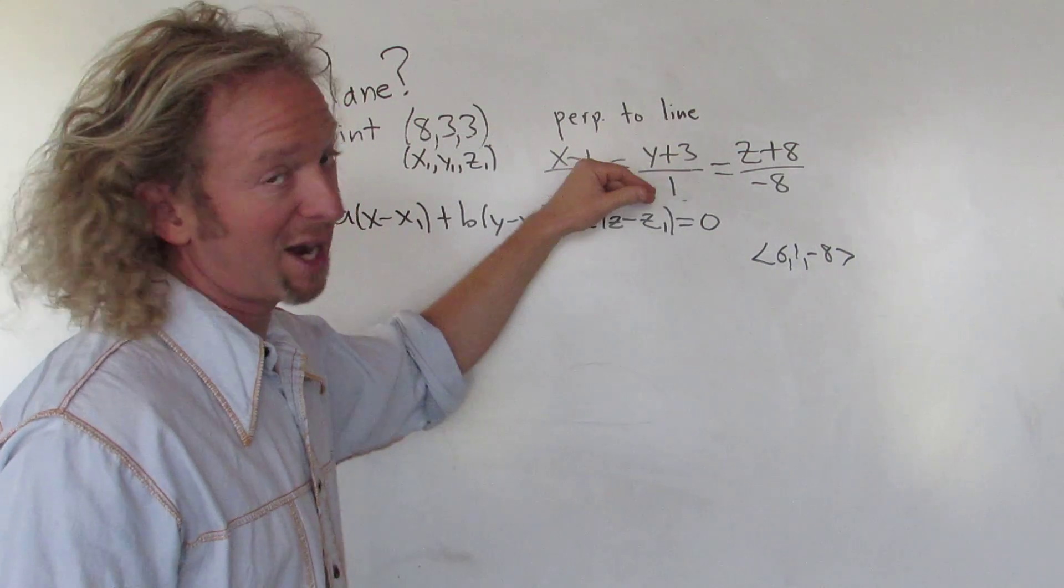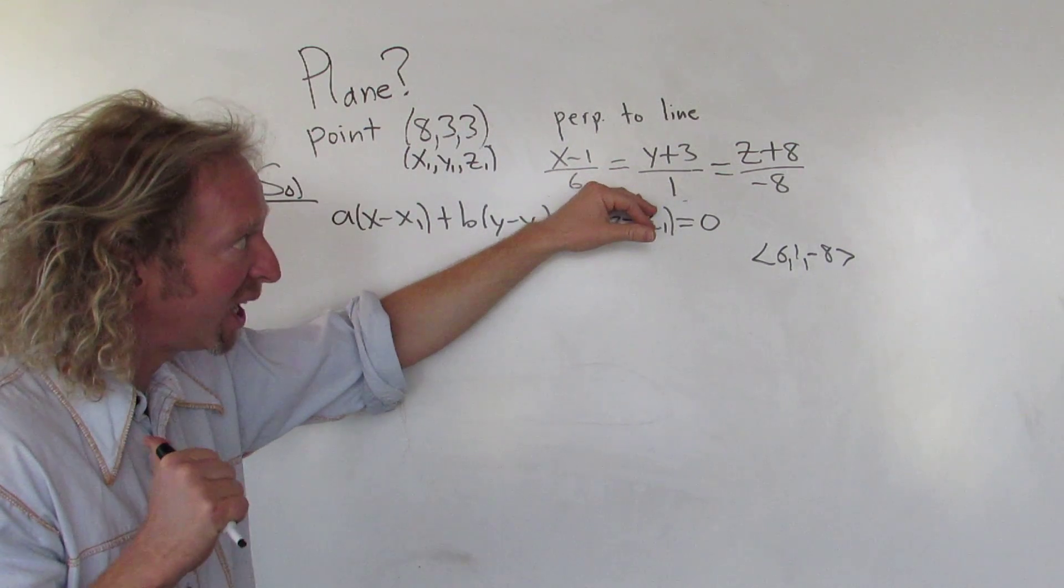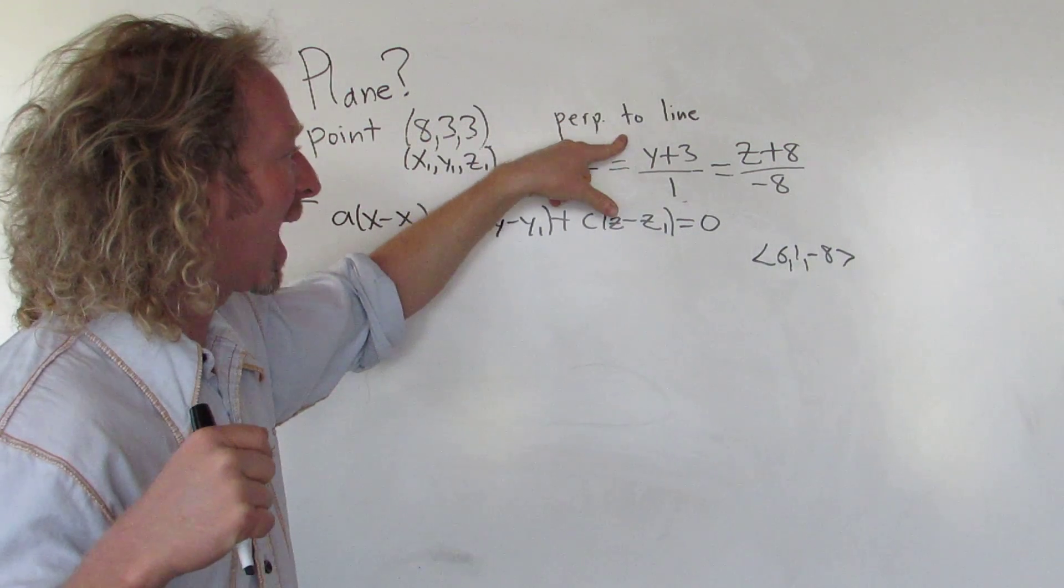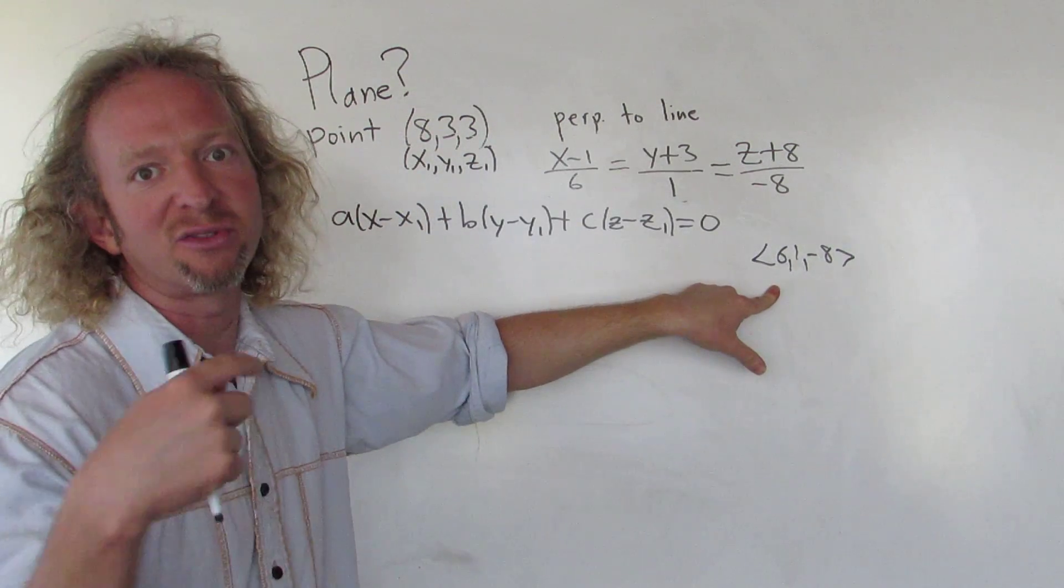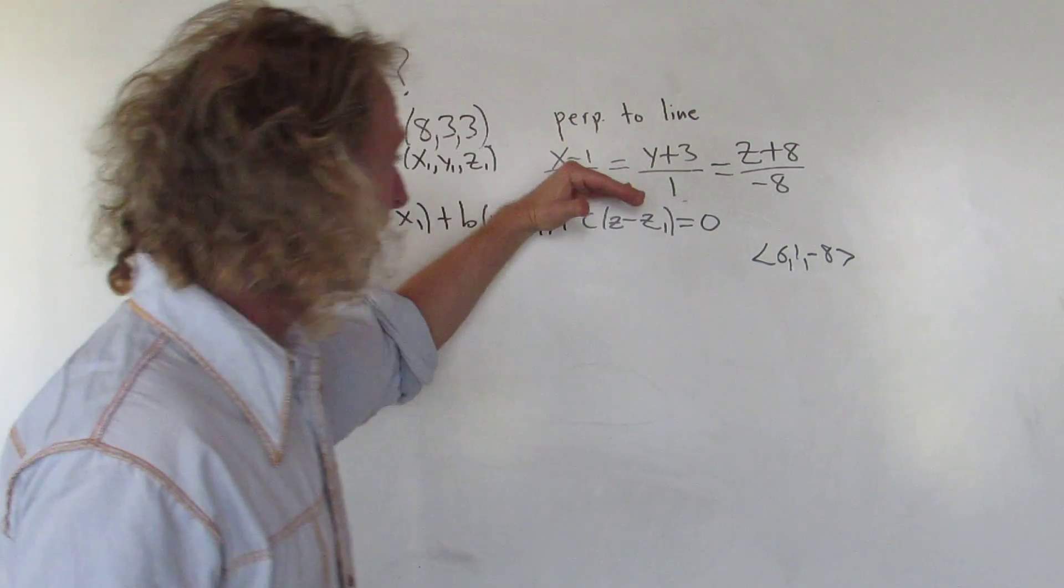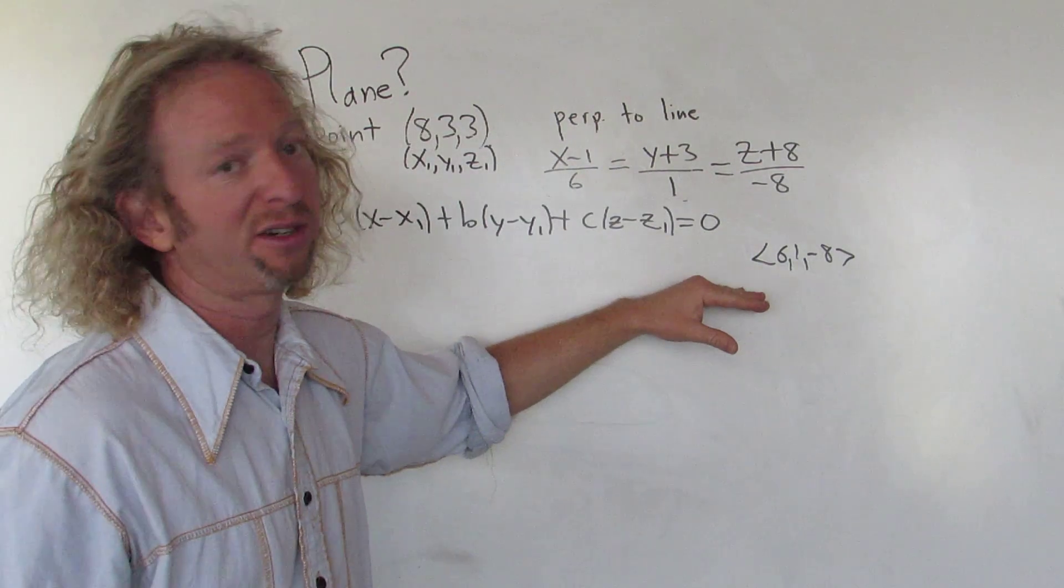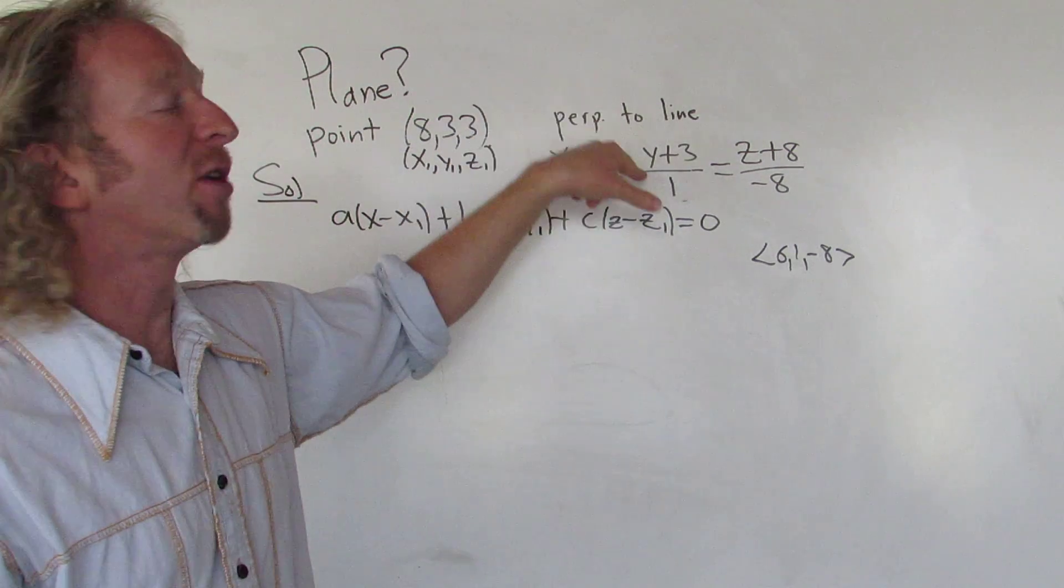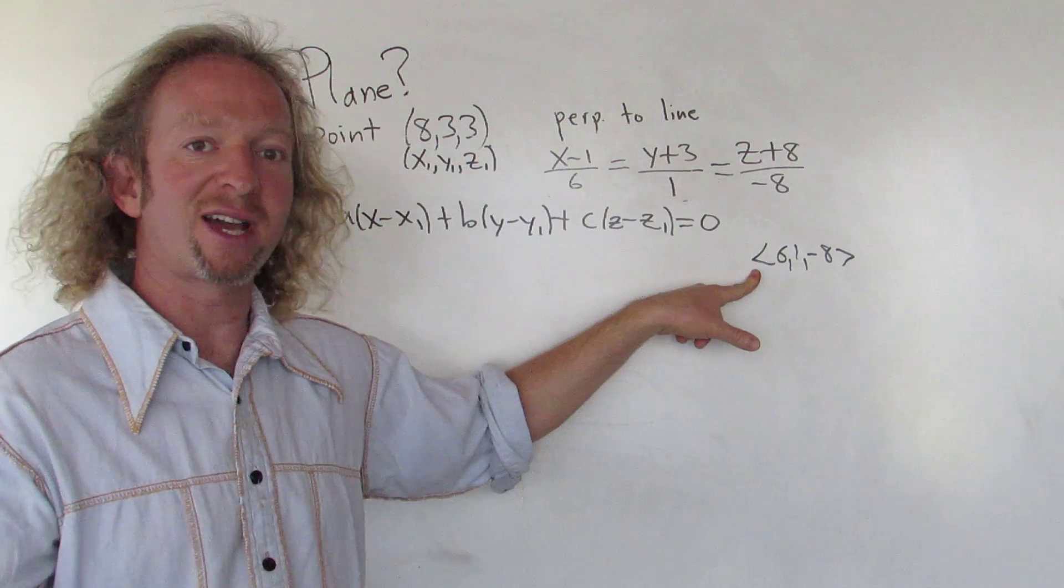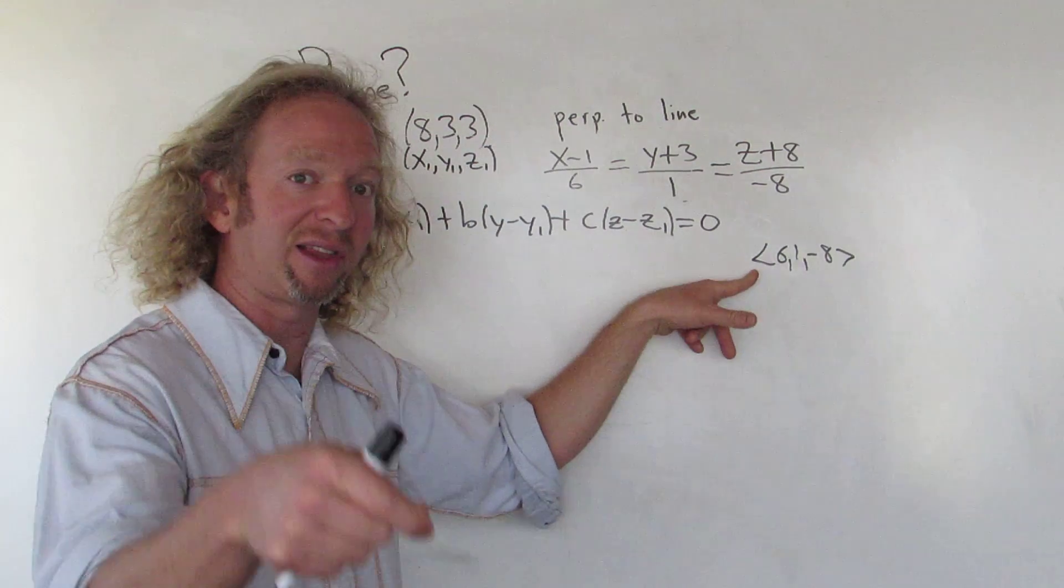This vector is parallel to this line. Our plane is perpendicular to this line. Therefore, our plane is perpendicular to this vector. So this is the normal vector. This vector is parallel to the line. It's called the direction vector. Our plane is perpendicular to this line, therefore perpendicular to this vector because the vector is parallel to the line.